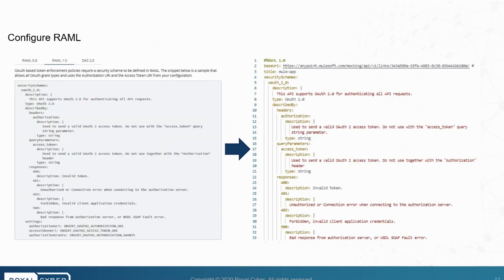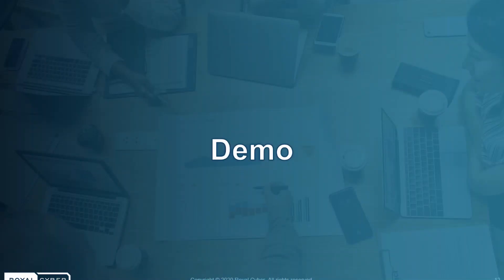After applying the OAuth 2.0 access token policy, we will copy the RAML contents from the API specification and paste it into the RAML specification. Let's now move on to the demo and see how this works.